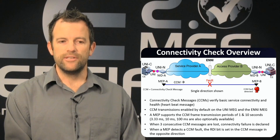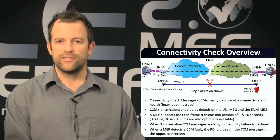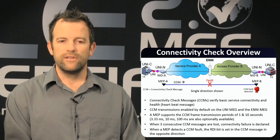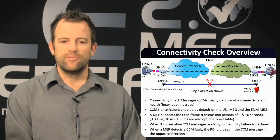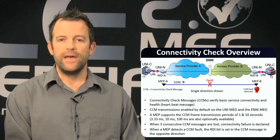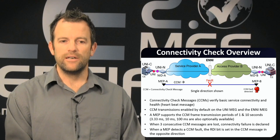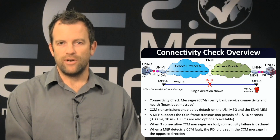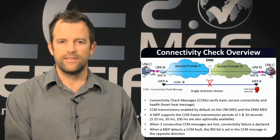I'm showing a use case here with a service provider and access provider and an EN&I connection between the two, with a fault showing at the EN&I. CCM transmission is enabled at the MEG, and I'm showing a UNI-MEG here. The MEP at MEP A is sending CCMs at a transmission rate, for example, one second or ten seconds.